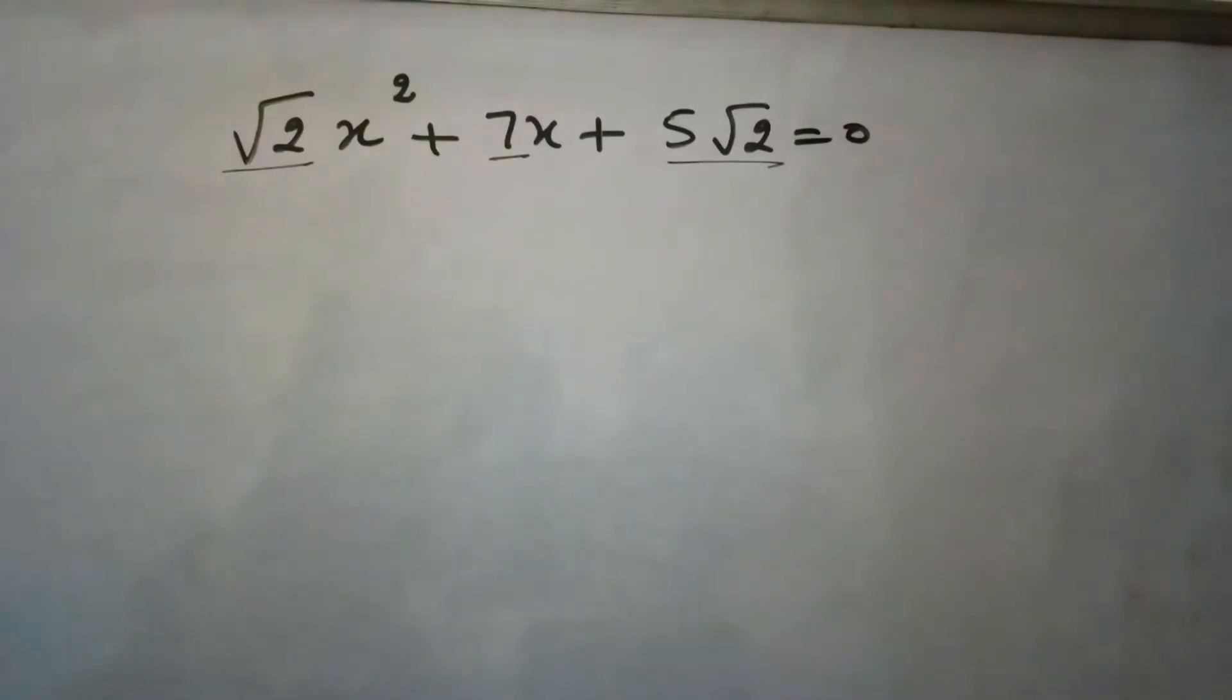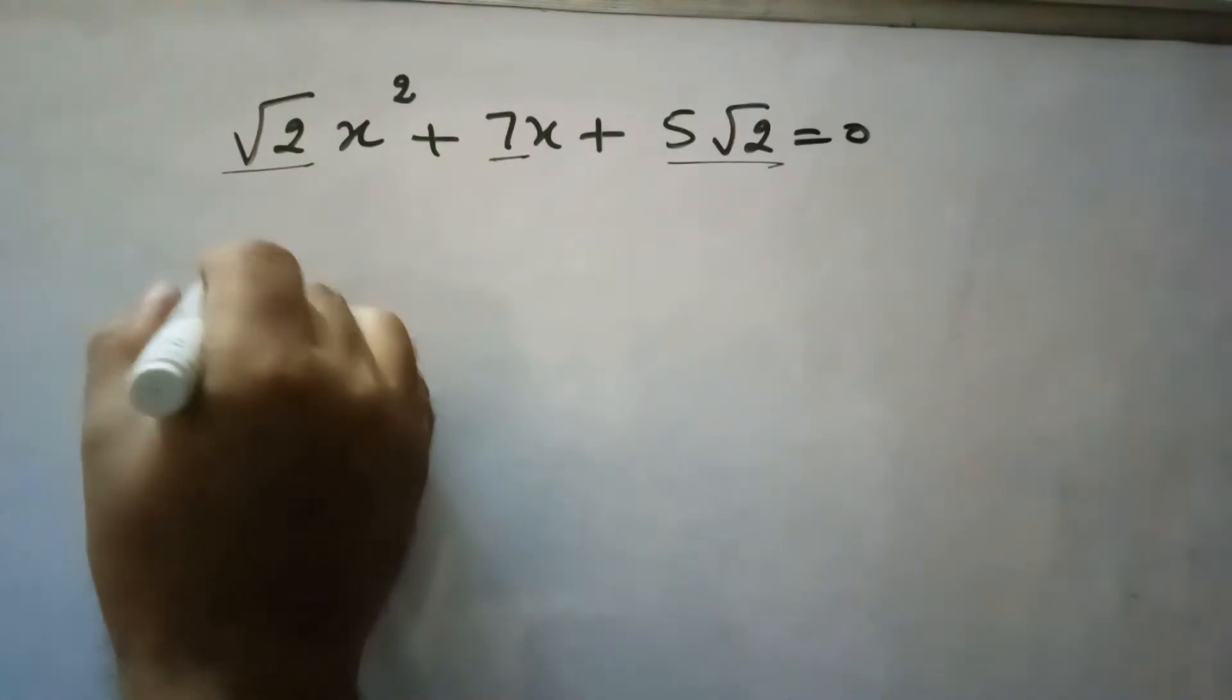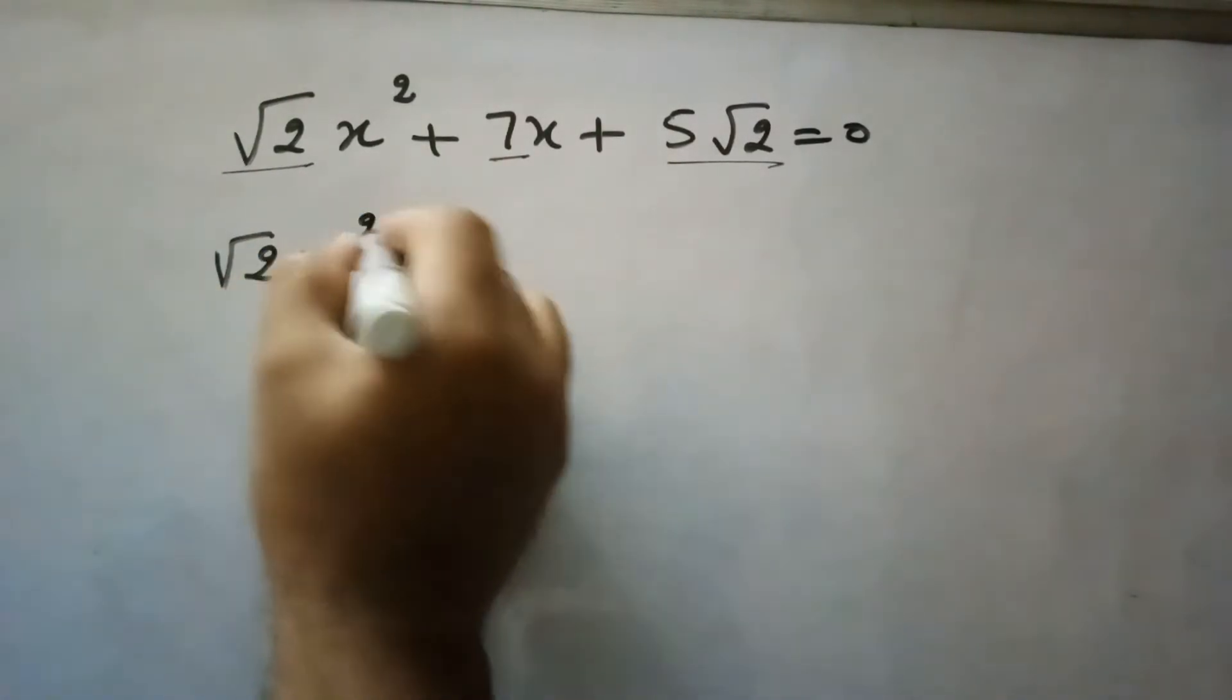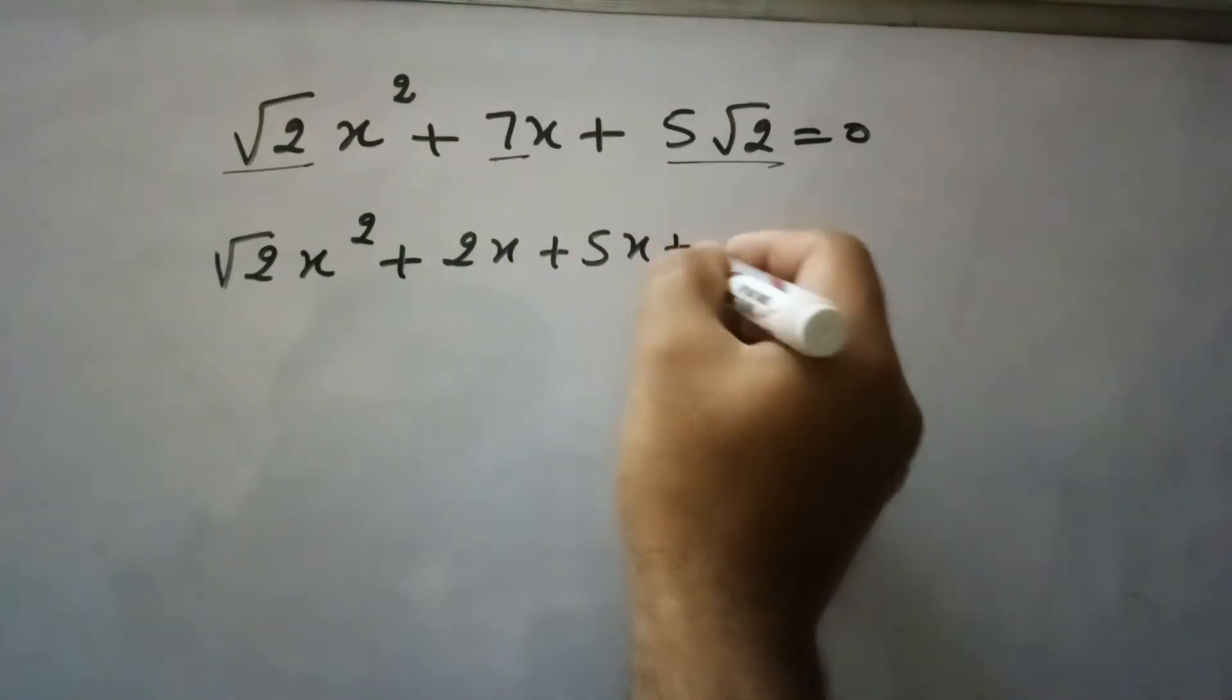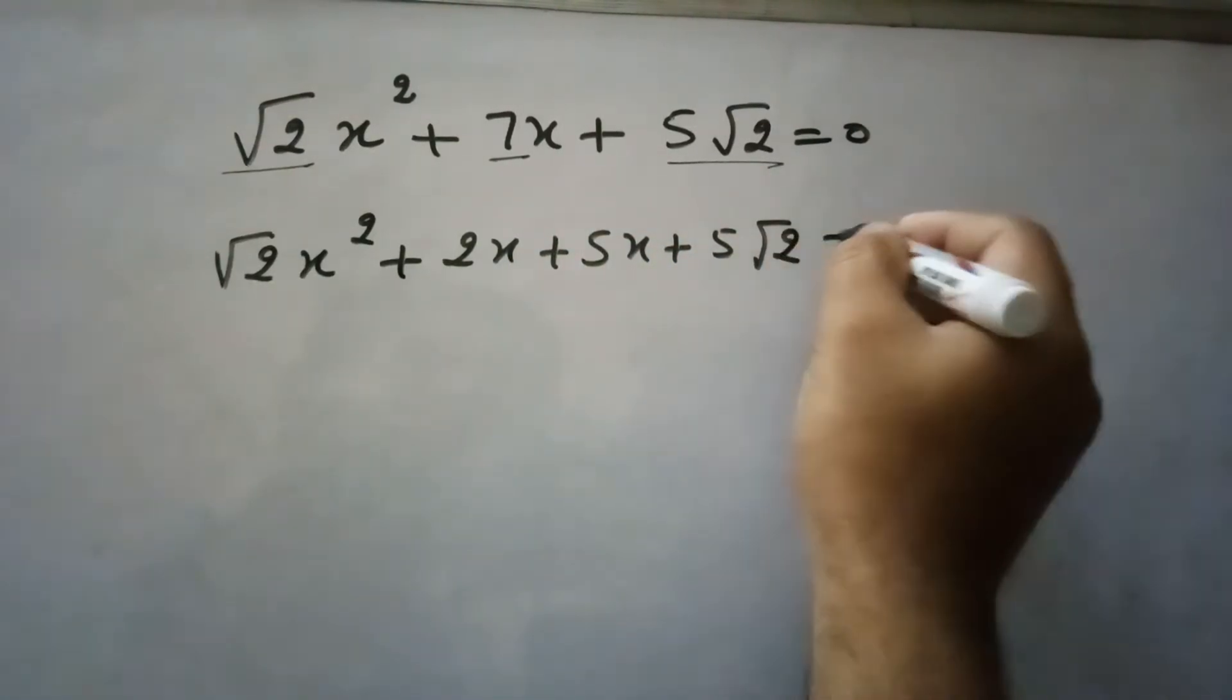So the factors are 5 and 2. We will write here under root 2x square plus 2x plus 5x plus 5 root 2 equal to 0.